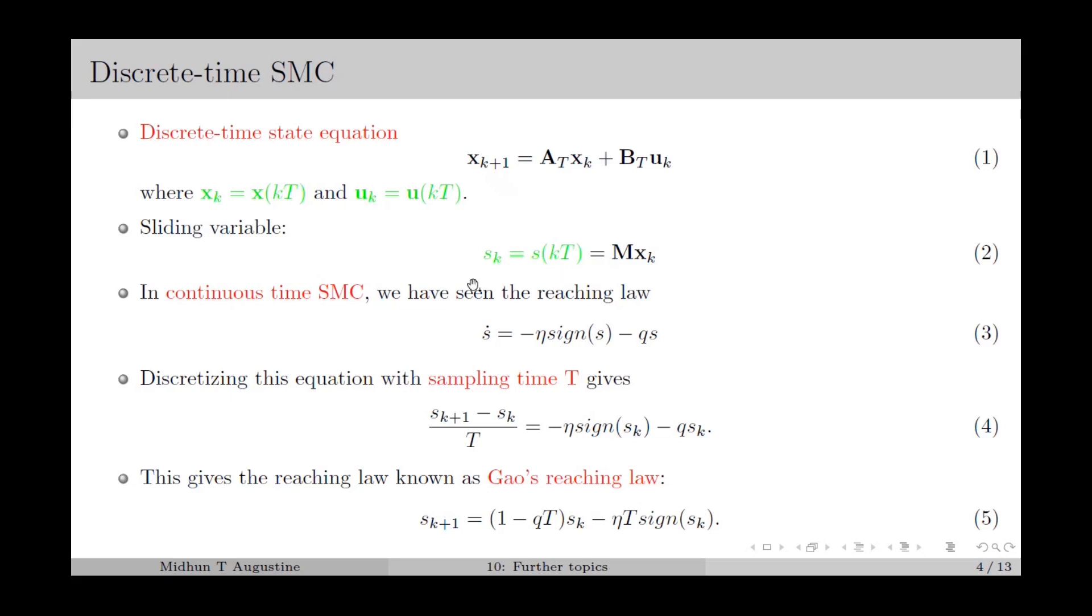In continuous-time SMC, we have seen the reaching law in equation 3, which ensures the eta reachability condition, where eta and q are parameters chosen as positive.